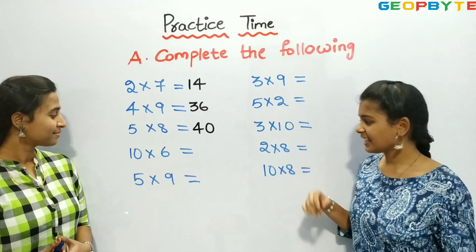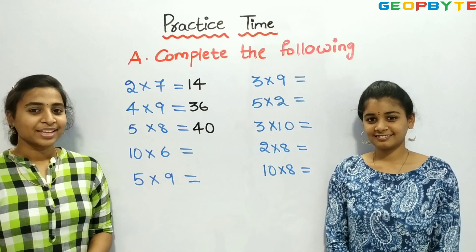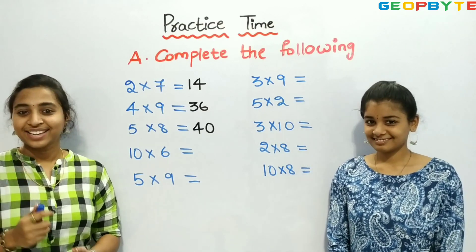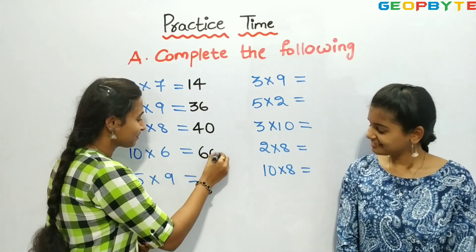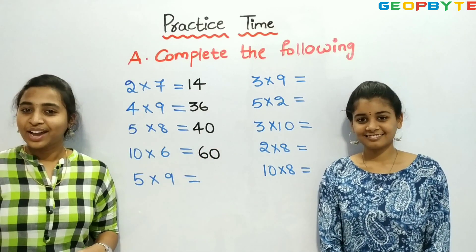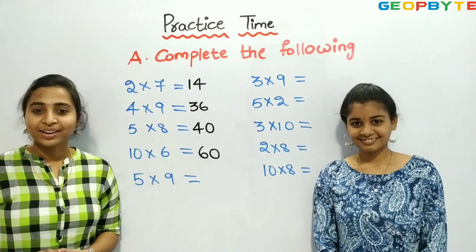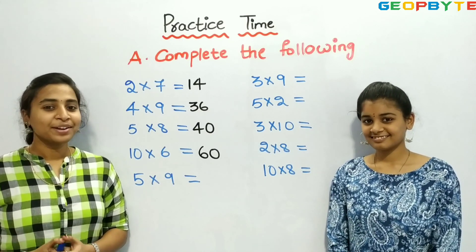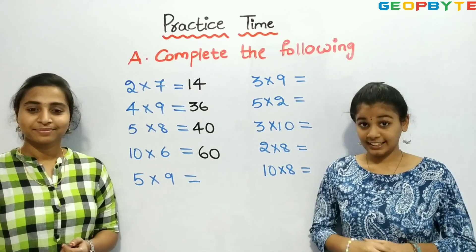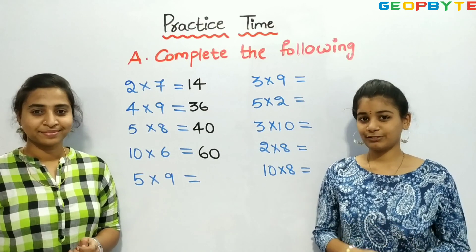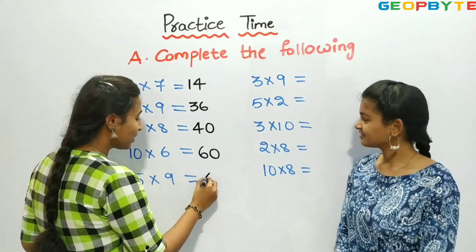Now, let us see the next one: 10 into 6. Yes, 10 into 6 is nothing but 60. Let us write 60. Now, let us see the next one: 5 into 9, or 5 times 9. What is the answer? Yes, 5 into 9 is equal to 45. Yes, 5 nines are 45. Let us write 45.